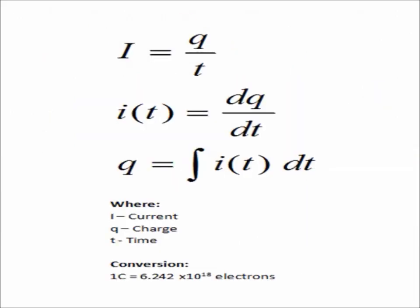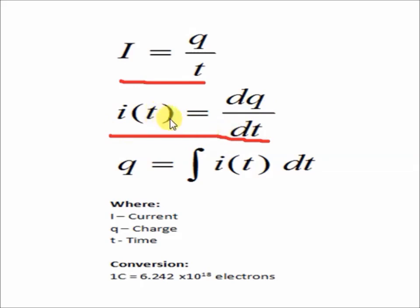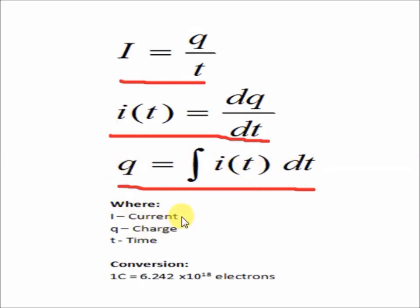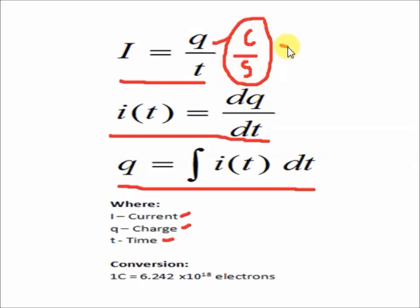The formula for current is I = Q over T. In derivative form, the formula is I as a function of time is equal to the derivative of charge over the derivative of time. If you multiply from the other side, you get dQ = I(t) dT. Integrating both sides gives you the formula for charge: Q = integral of I as a function of time dT. Where I is current, Q is charge, and T is time. The unit of charge must be coulombs and the unit of time must be seconds, so coulombs per second equals amperes.